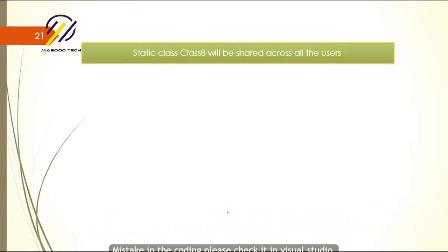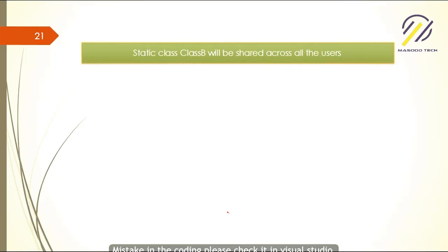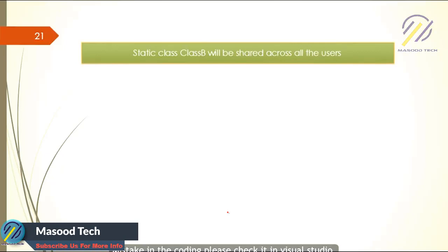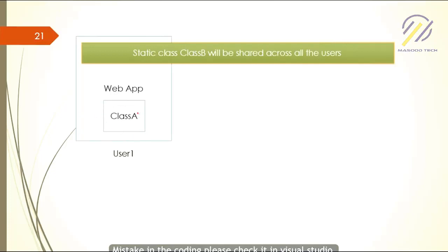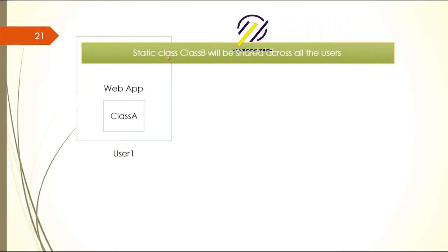Let's say you have a web app with a static class B. Before the app starts — maybe you put it in the cloud or a user tries to access it — the static class B will be created first. Then the web application runs with the other classes. Class A is a normal class, created when user one requests something, but the static class B is created regardless of whether user one needs it or not.